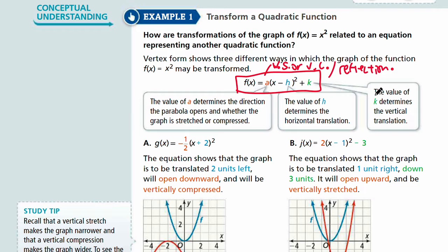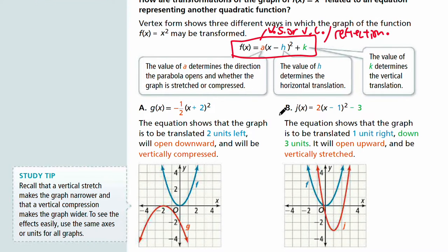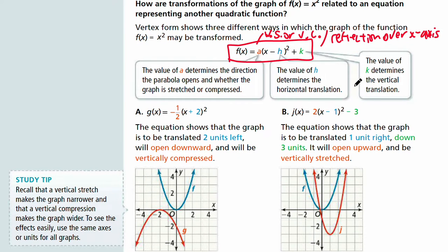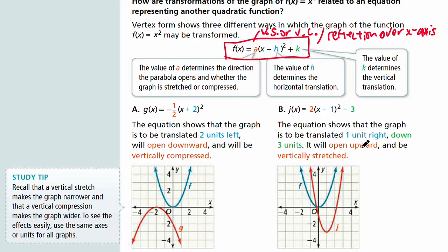If it's a reflection, that changes the direction of the parabola. If it's vertically reflected, that means you have a reflection over the x-axis. We learned this in lesson 1-2, transformations of functions. If you're not familiar with this, please go back and relearn what we covered there.